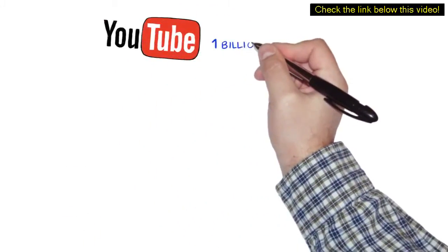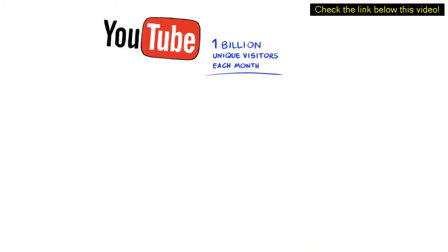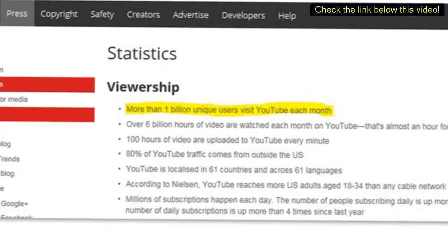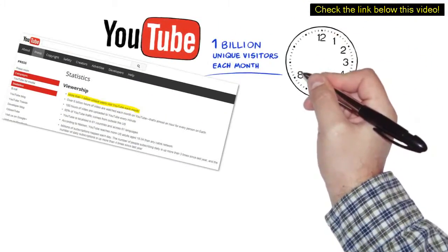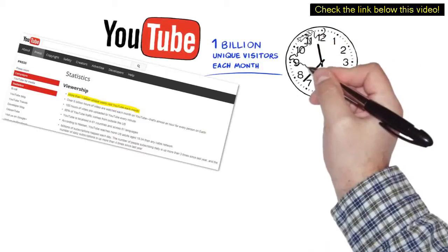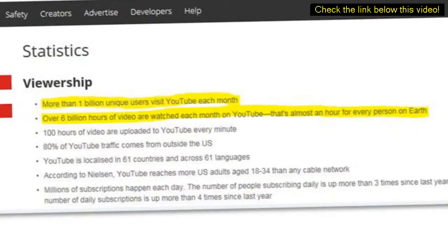Did you know that YouTube gets over 1 billion unique visitors each month to its website? Now you do. And did you know that over 6 billion hours of videos are being watched each month on YouTube? That's almost one hour for every person on Earth.